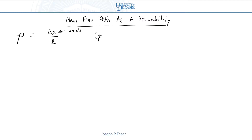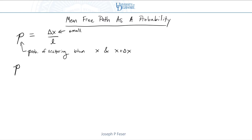So P is the probability of scattering between x and x plus delta x. And if that's true, then the probability of not scattering is just one minus that. This is the probability that a particle did not scatter over that distance.